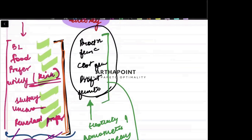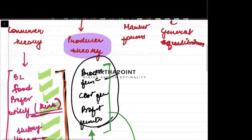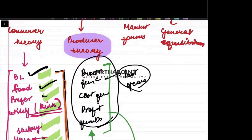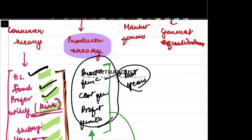Whenever you study any topic, make sure you do all possible past year questions from it. Whenever we have studied any topic, I have always tried to ensure that the DPPs we do include all corresponding past year questions. Whenever we take any surprise test, we include all latest past year questions so that if you can solve that year's paper on the topic you have studied, it means you are on the right path.